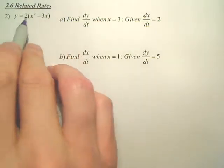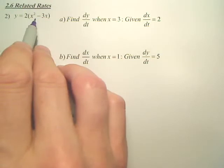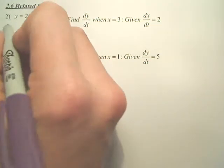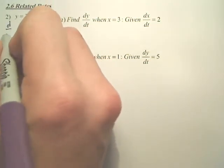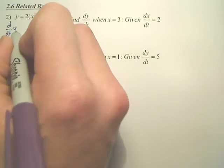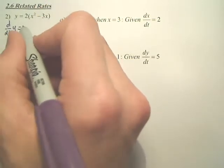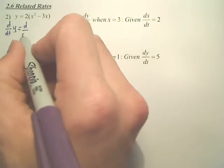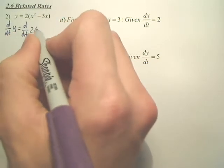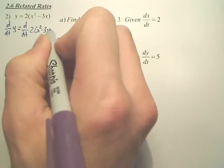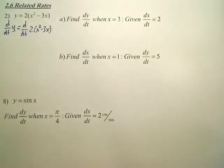So we're doing related rates. We're going to derive this equation with respect to time. When you derive with respect to time, it looks something like this. Derive y with respect to time. You're doing basically implicit differentiation and you're also deriving the equation with respect to time.